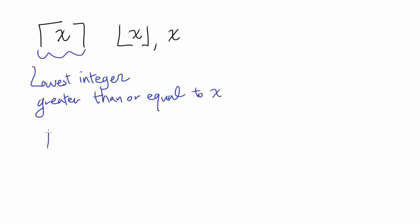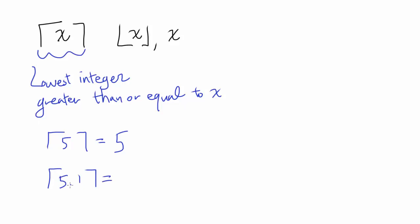So if you plug in 5, the integer greater than or equal to 5, the lowest one is going to be 5, so the ceiling of 5 is just going to be 5. And ceiling of 5.1 — the lowest integer greater than or equal to 5.1 is going to be the next integer up, or 6.